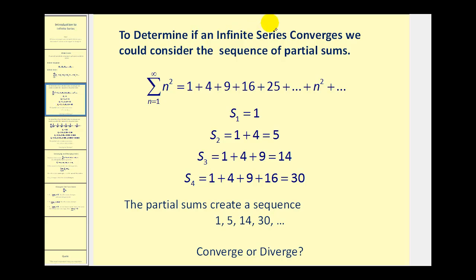To determine if an infinite series converges or diverges, we must consider the sequence of the partial sums. So if we have an infinite series and we want to know if it converges, we're going to take a look at the sum of the first term, which would be just one. The sum of the first two terms would be one plus four, which equals five. The sum of the first three terms would equal fourteen, and so on. The question becomes: does the sequence of the partial sums — one, five, fourteen, and thirty — converge or diverge?